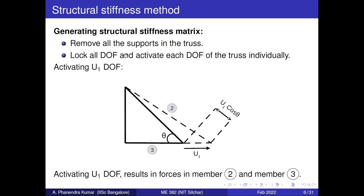The second step is to lock all the degrees of freedom. By locking, I mean — since we removed the supports, we now need to constrain all the degrees of freedom. This means the displacements along x and y coordinates of each individual node should be restricted. So initially all the displacements are restricted — every node is effectively simply supported.